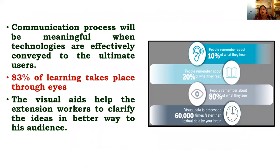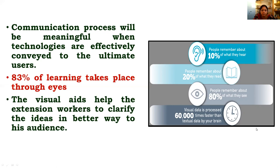Research tells us that people remember about 10 percent of what they hear, 20 percent of what they read, and 80 percent of what they see. Based on research findings, people can remember nearly 80 percent of what they see, and 83 percent of learning takes place through the eyes. Whatever we learn is largely through visuals, not just through oral means. That is why visual aids are so important in the communication process — they help in conveying a technology effectively and efficiently to the ultimate user.